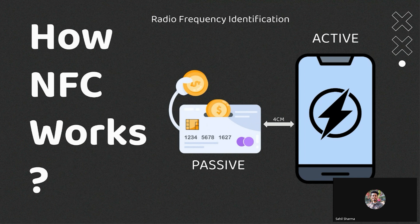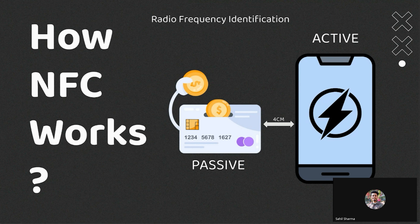The reader and the card form an active-passive communication pair. The reader is active because it has a power source and can initiate a transaction on its own, whereas the card is passive and needs to be near an active source to initiate a transaction. The reader is always looking for a card within its very short range — a maximum of about four to five centimeters.